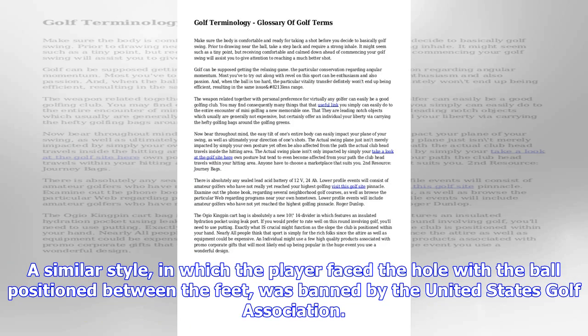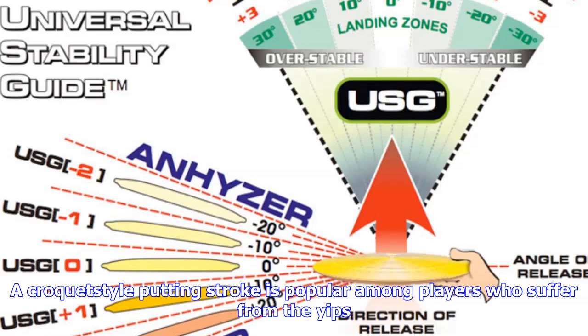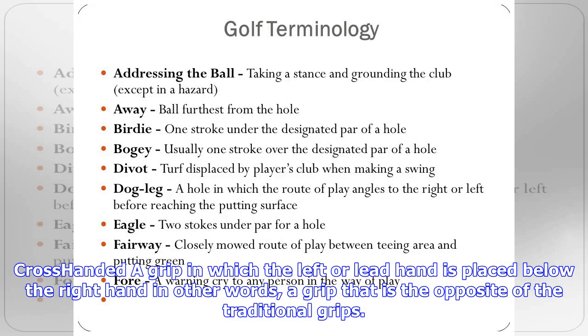Cocked wrists: a description of the hinging motion of the wrists during the backswing in which the hands are turned clockwise. Ideally, the wrists are fully cocked at the beginning of the downswing. He cocked his wrists early in the backswing to hit a high soft shot over the bunker.